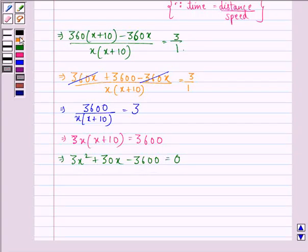Dividing throughout by 3 we get x squared plus 10x minus 1200 is equal to 0.